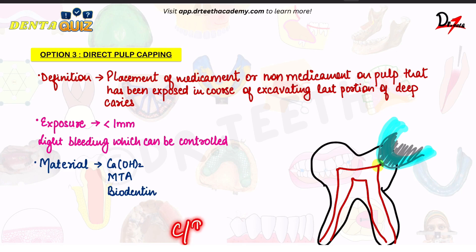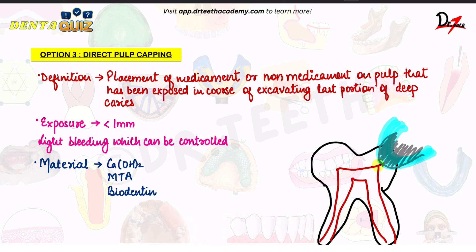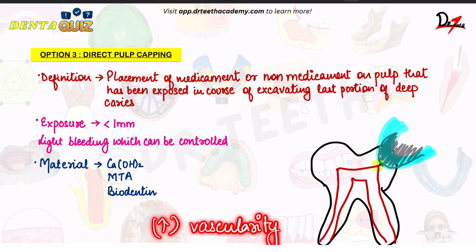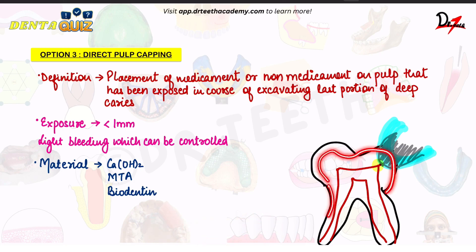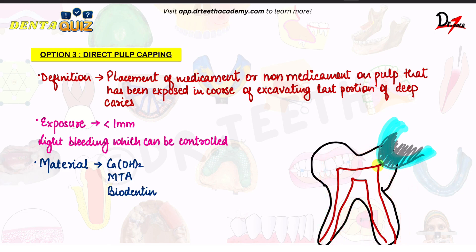An important point is that this modality is contraindicated in primary teeth. This is because primary teeth have high vascularity, so any infection that reaches the coronal pulp will suddenly spread throughout because of that high vascularity. That is why we don't risk performing DPC in primary teeth.